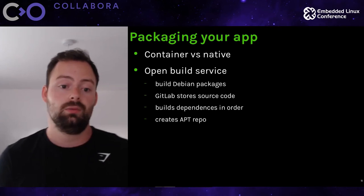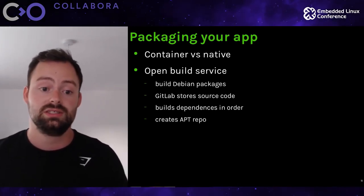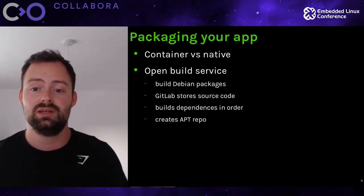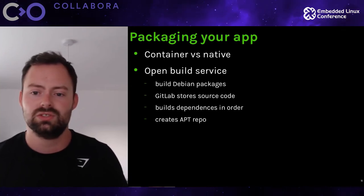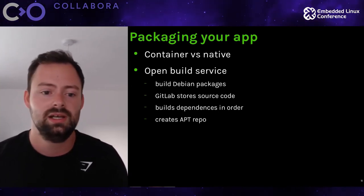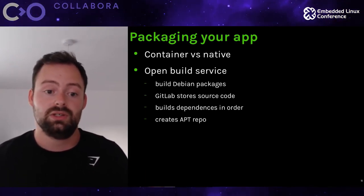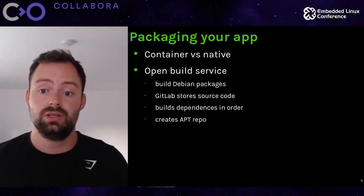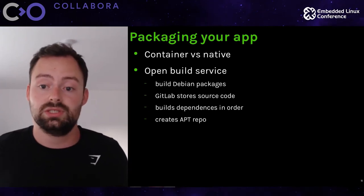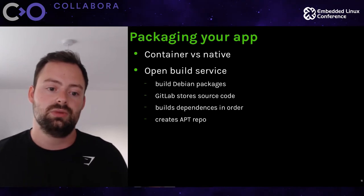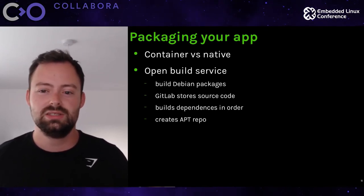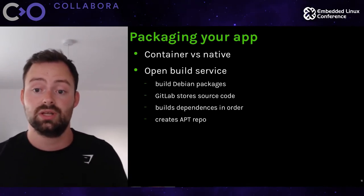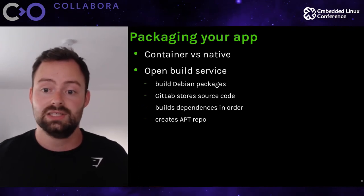For packaging your application, there's a big trend toward Docker containers so apps can run on any machine. There's also the camp that runs software natively, which is more likely if you have drivers or code that talks closely to the hardware. Docker these days is easy to install and works really well. We use OBS — Open Build Service from SUSE — to build Debian packages from customer software and apps, with source code stored in GitLab. OBS is very good because it builds all the dependencies in the right order and creates apt repositories which we then use in the image building process.